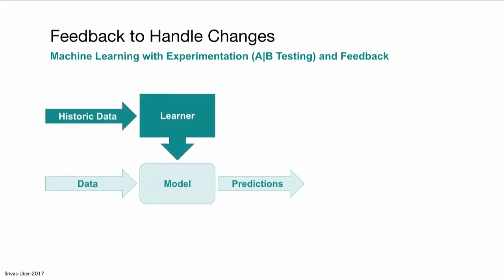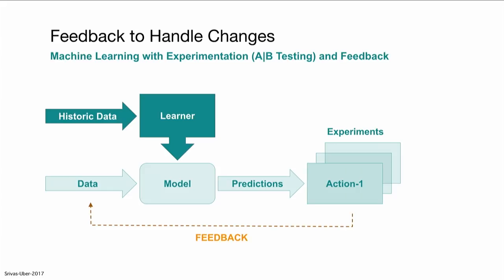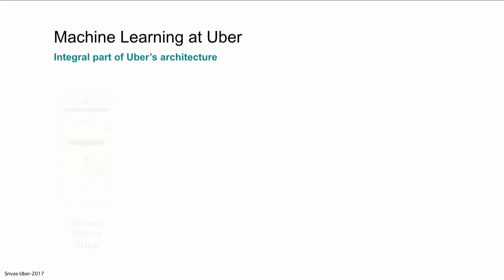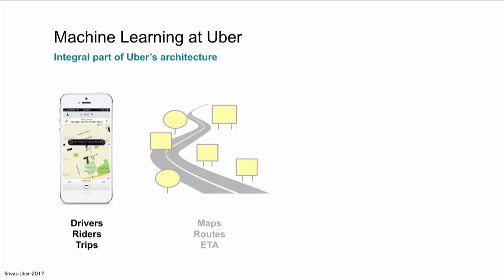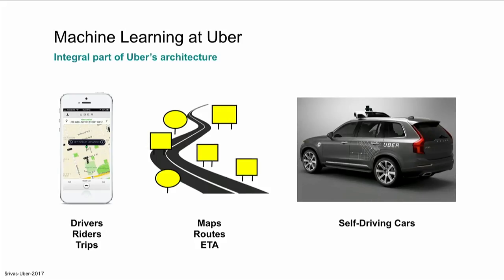So machine learning with feedback is: here's the traditional machine learning model, but you take the outcomes, and you look at what actions you did, and the successful ones, you feed back. This is a very important technique that we're using in Uber across the board — it's become part of our core infrastructure. We're talking about trips, drivers, maps, routes, ETA — these things also use machine learning. And the other place where machine learning is becoming very popular is in self-driving cars.